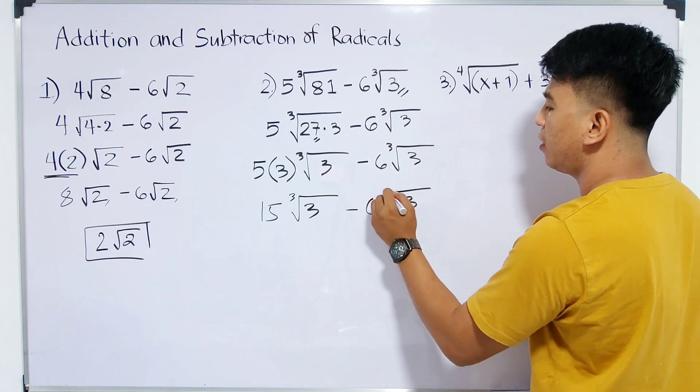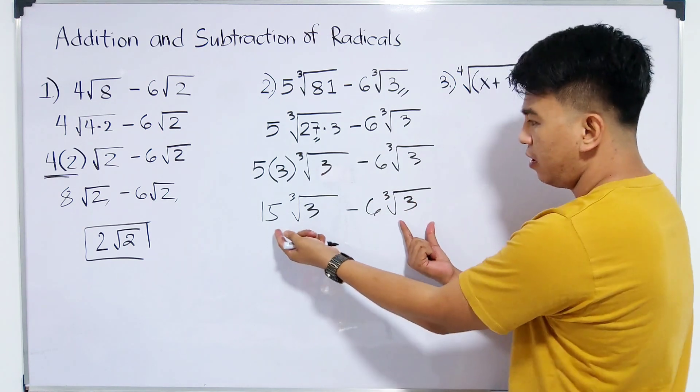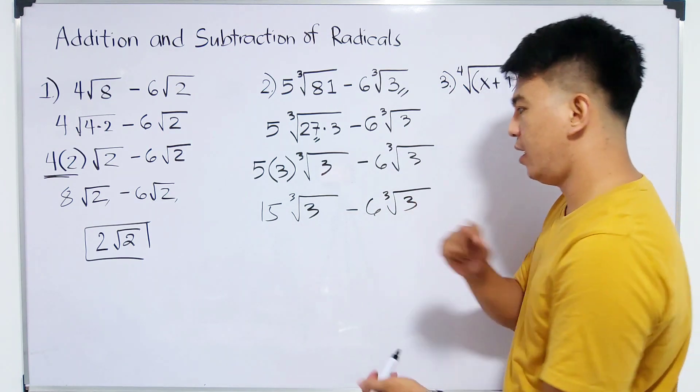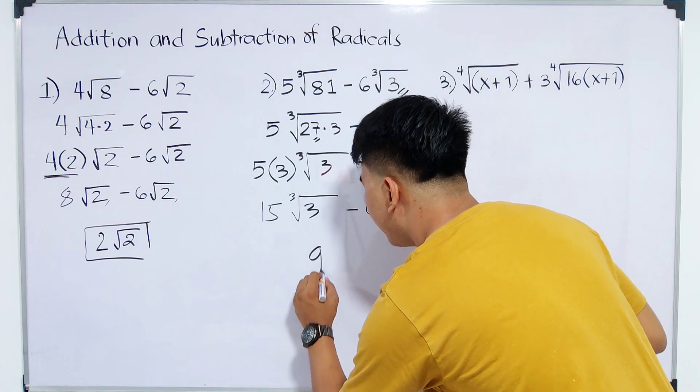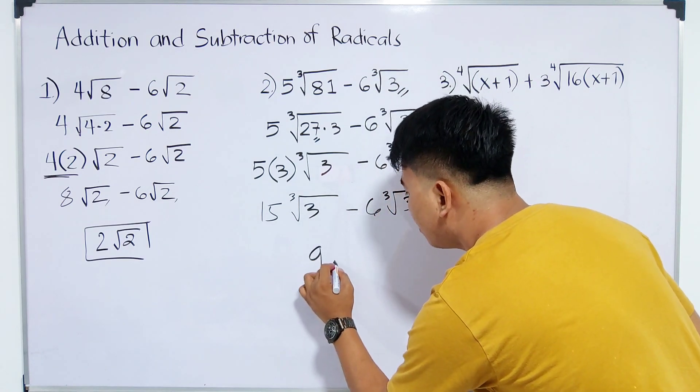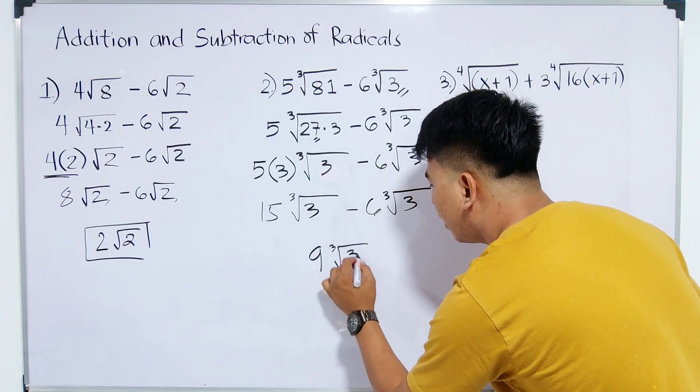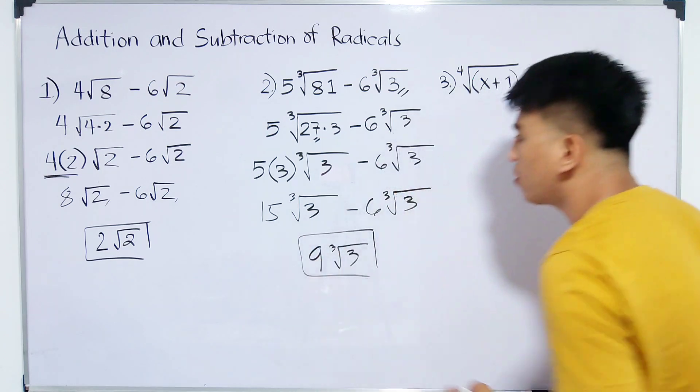All we need to do is to simplify this. This is 15 times the cube root of 3 minus 6 times the cube root of 3. And 15 minus 6 is 9. So our final answer now is 9 times the cube root of 3. This is our answer for item number 2.